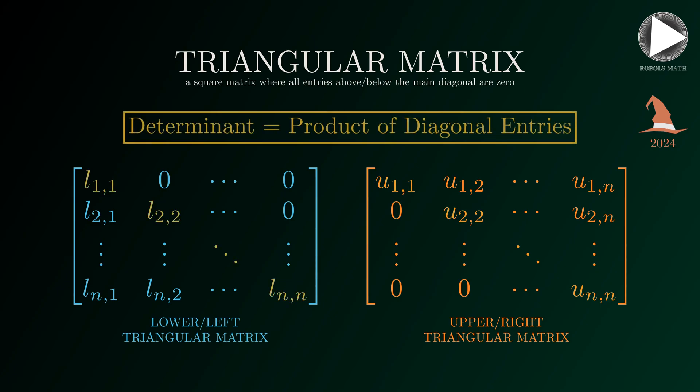One useful property of triangular matrices is that their determinant is simply equal to the product of the entries in the diagonal. It's quite straightforward to prove this property using the cofactor method since the determinant of the cofactors are mostly zero.